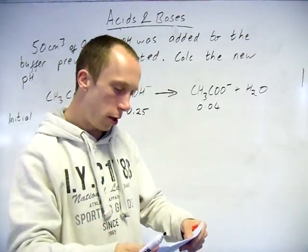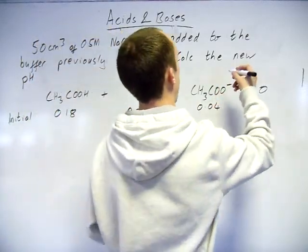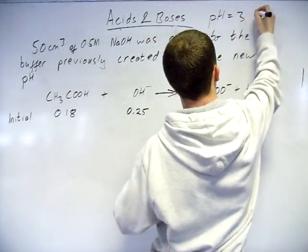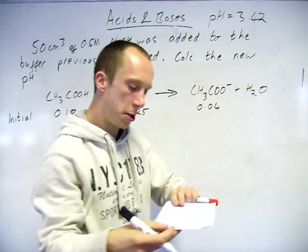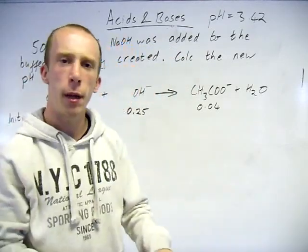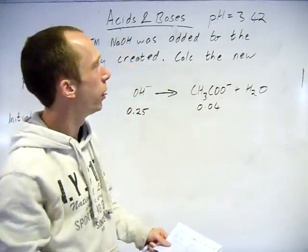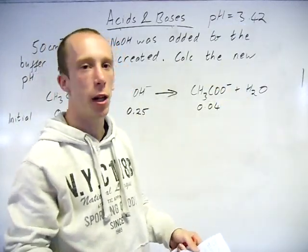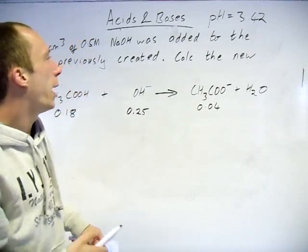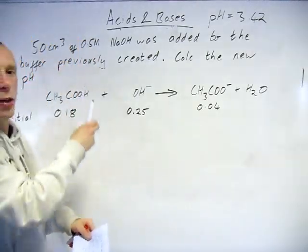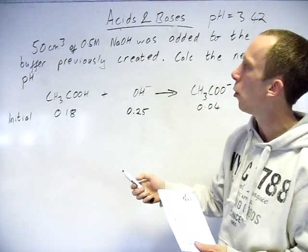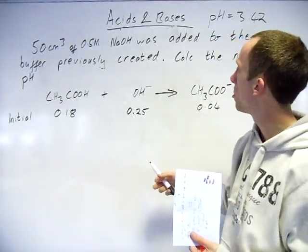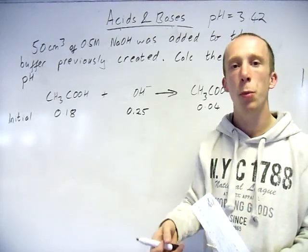If you did the calculation, hopefully the pH—I think my number's correct, got a lot of numbers scribbled on this sheet—you should have came out with 3.42. Stick a comment if I've done that wrong. And the next question says a further 50 cubic centimeters of 0.5 molar sodium hydroxide was added to the buffer created previously. Calculate the new pH.